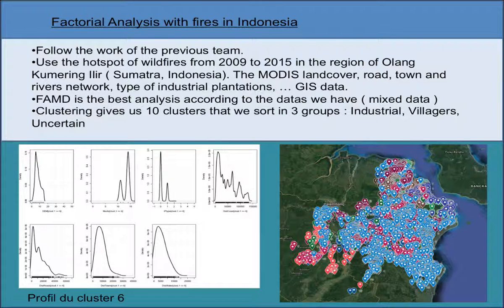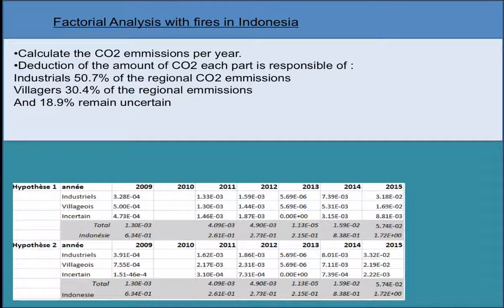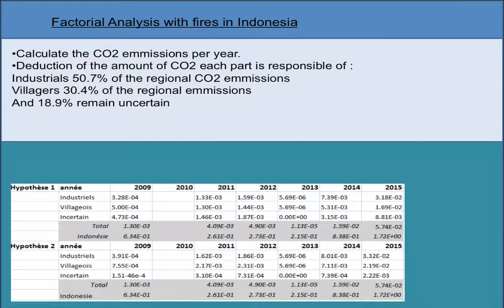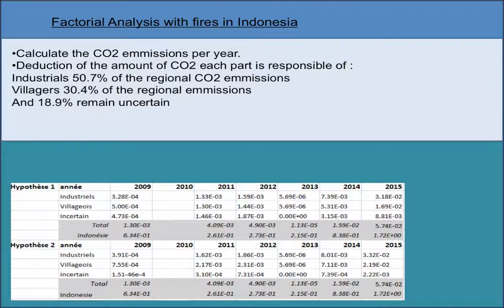The hotspots detected by NASA and the corresponding fires constitute 10 clusters and 3 groups. A first group of fires is statistically closely linked to villages or rural populations and their agricultural smallholdings. A second group is statistically closely linked to industrial plantations such as acacia, oil palm, rubber trees, etc. The third group is statistically too uncertain to conclude on the probable origin. With these results, the team can estimate CO2 emissions from different kinds of fires.